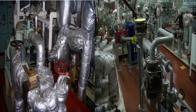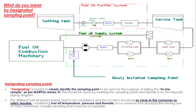Now let us see how it looks like in an engine room. As you can see, it looks very complicated — this is how engine room pipelines are. In simple terms, if you try to understand it, it looks like this in a simple pipeline diagram.